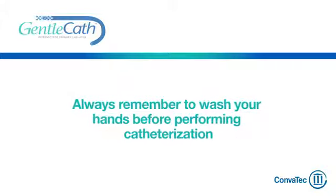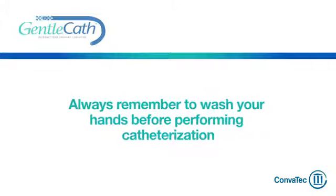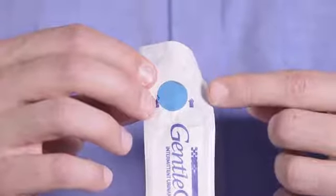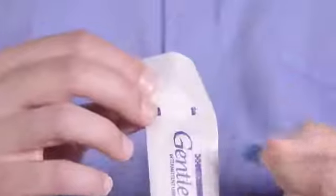Before using the catheter, make sure you have washed and disinfected your hands. You can use the blue tab on the back of the catheter packaging to stick it to a wall while you do this. The catheter will be ready to use once you are finished.